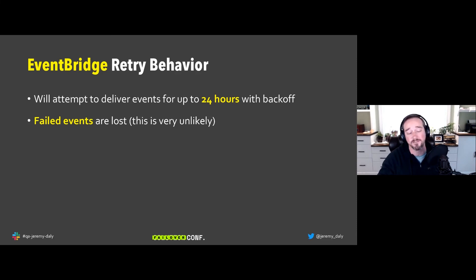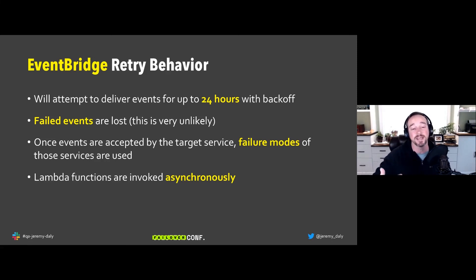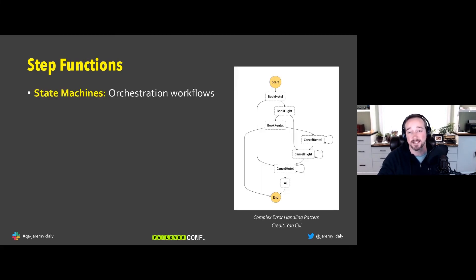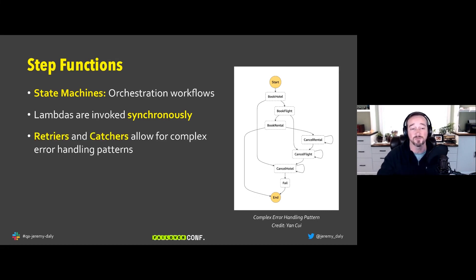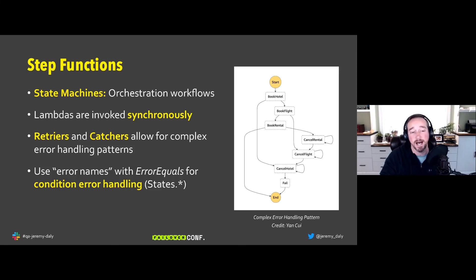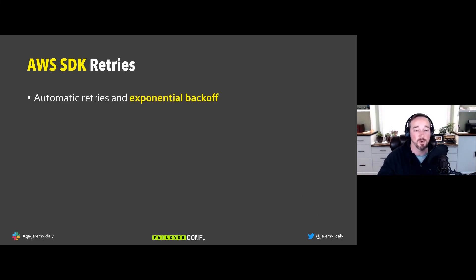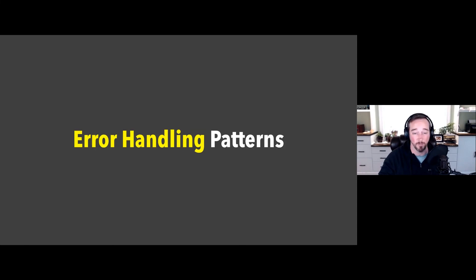EventBridge retries for 24 hours with backoff. Failed events are lost but this is very unlikely. Once events are accepted by a target service, that service's failure modes apply. For Step Functions and state machines — like the saga pattern — you can invoke Lambda functions synchronously, and if they fail use retriers and catchers for complex error handling: controlling error names, backoff rate, and interval seconds. AWS SDKs also have built-in retry behavior you can use.